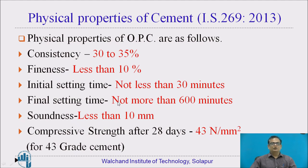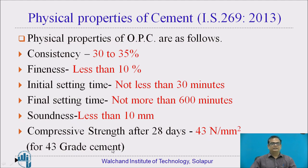Final setting time should not be more than 600 minutes, that means 10 hours. Soundness, when tested on Le Chatelier molds, the expansion of these molds should be less than 10 mm. Compressive strength after 28 days of curing should be minimum 43 N per mm² for 43-grade cement. For 33-grade cement this will be 33 N per mm², and for 53-grade cement this will be 53 N per mm².